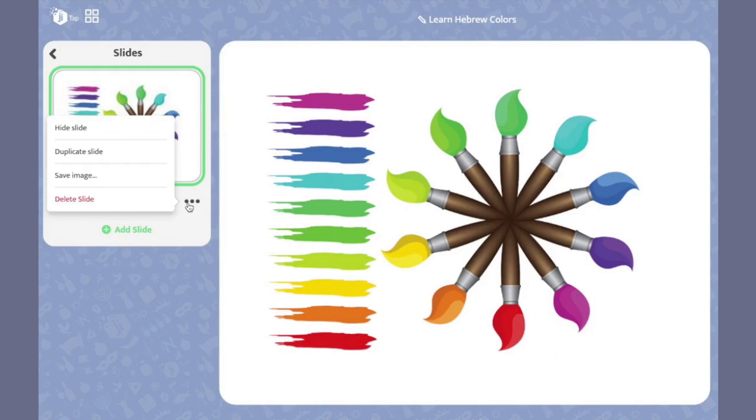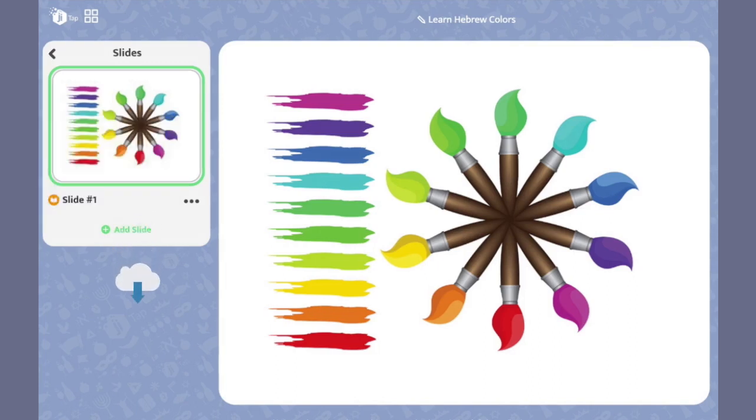And when you click the three dots here, you have options such as hide, duplicate, or save slide. This will save the entire slide as a flat image on your computer's hard drive. You will find this image located in your downloads folder.